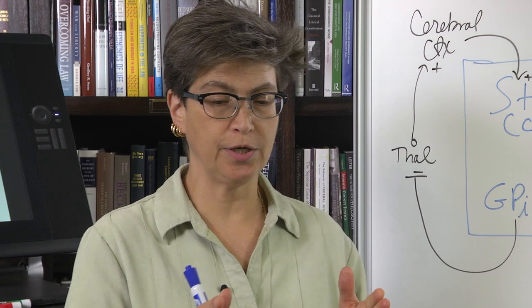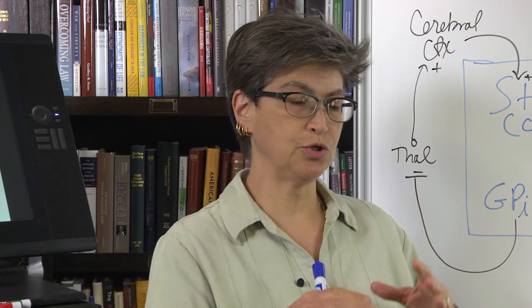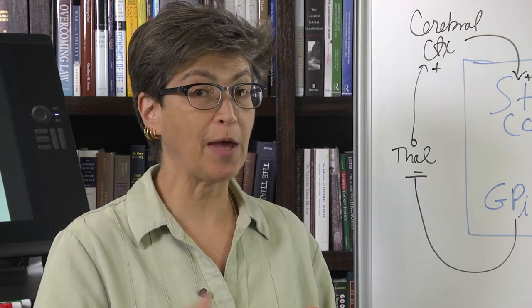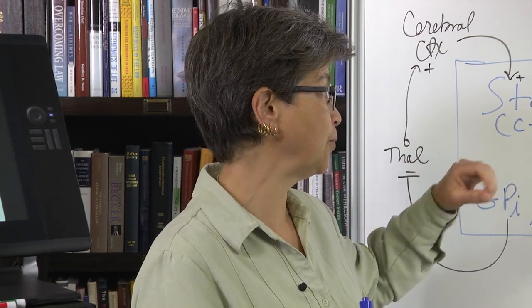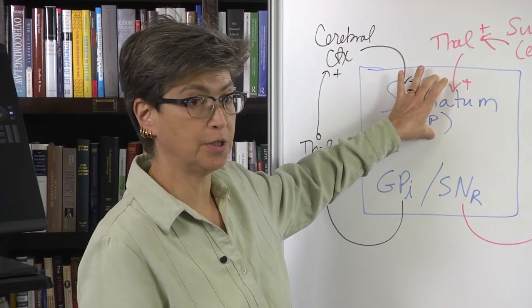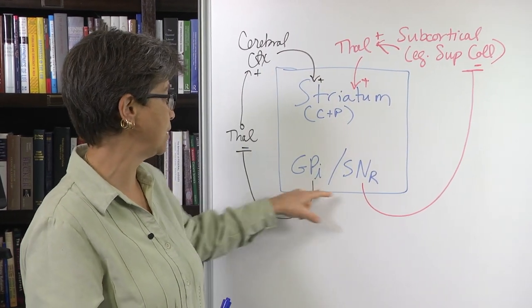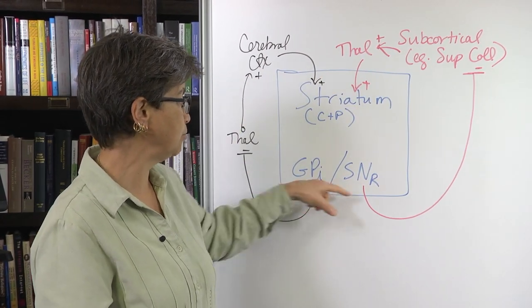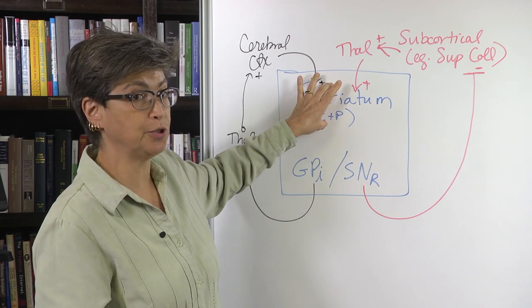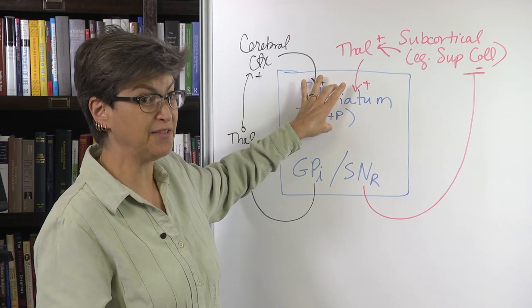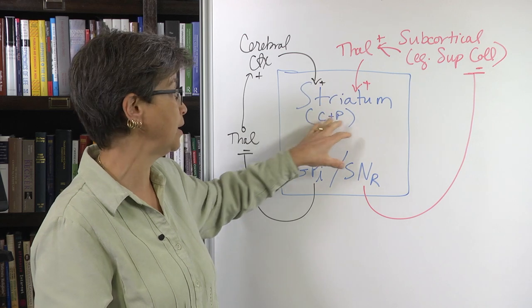We're going to concentrate on two circuits in the basal ganglia: the direct pathway and indirect pathway. For both pathways, the major input structure of the basal ganglia, outlined here in blue, is the striatum - the caudate and the putamen.